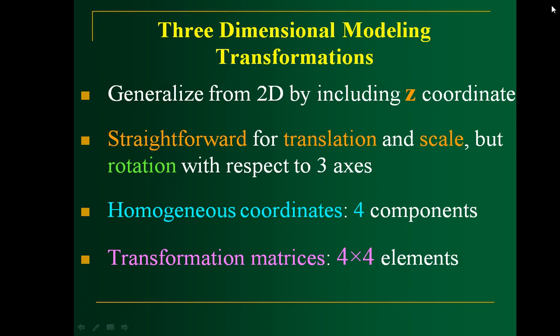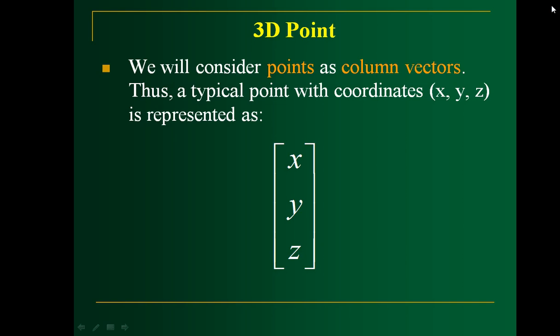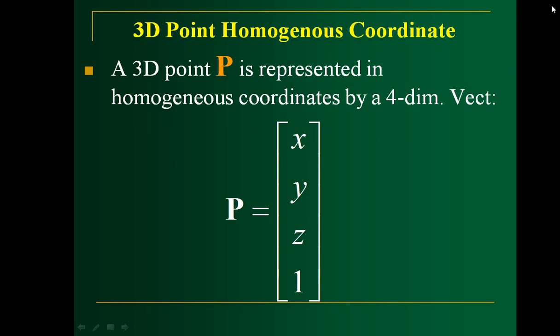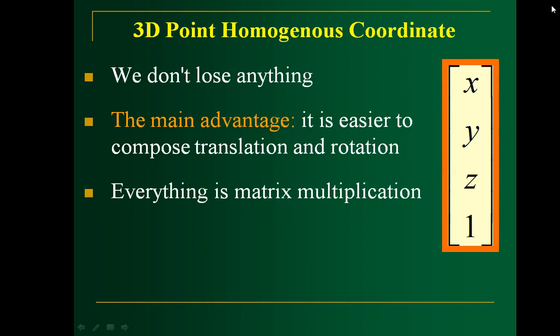In 2D transformations, you might have come across the terminology homogeneous coordinates. Homogeneous coordinates are used to make composite transformations easier, so that you can perform a sequence of transformations using a common matrix representation. For 2D objects you have a 3x3 matrix. Since 3D objects have three axes, you will have an additional row and column, so that the resultant matrix will be 4x4. This is how you represent a single point in 3D space in terms of homogeneous coordinates, which makes it easy to manipulate sequences of transformations.